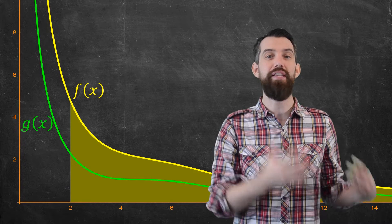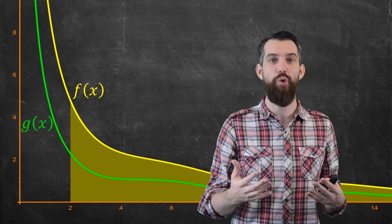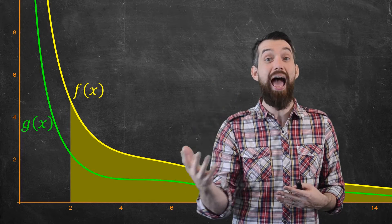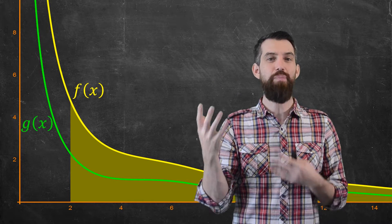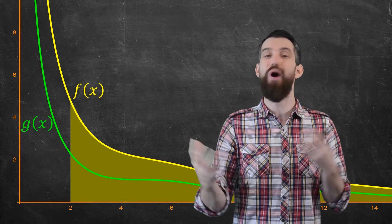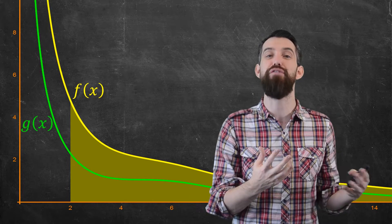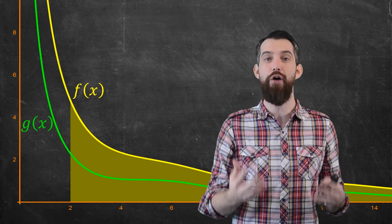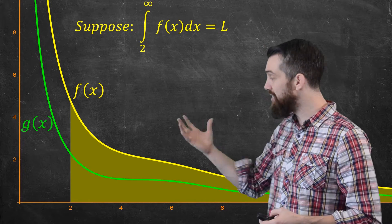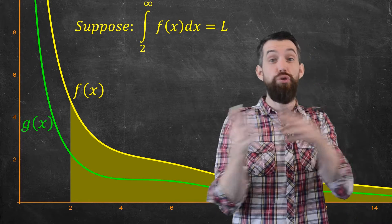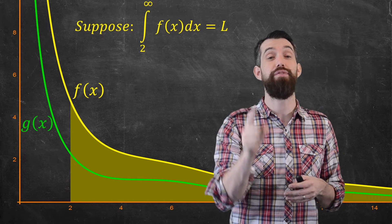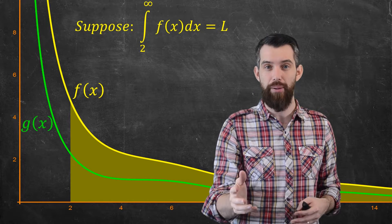What I want to do in this video is a comparison test — a way to talk about improper integrals involving f and compare them to integrals involving g, and try to get some sort of convergence or divergence information out of it. Suppose it was the case that the integral from 2 to infinity of f did converge, converging to a finite value L.